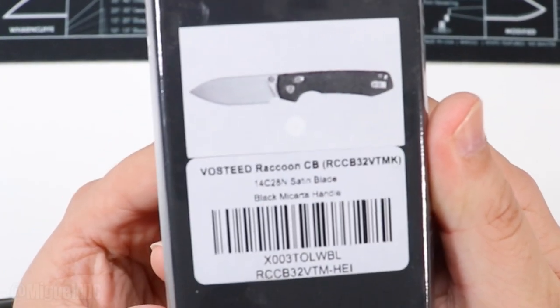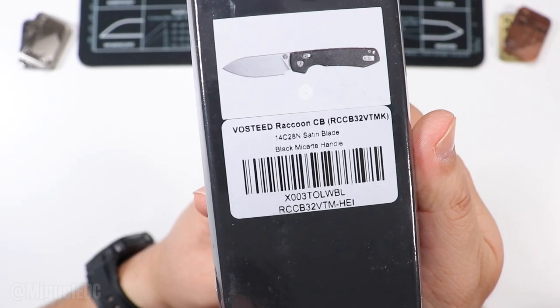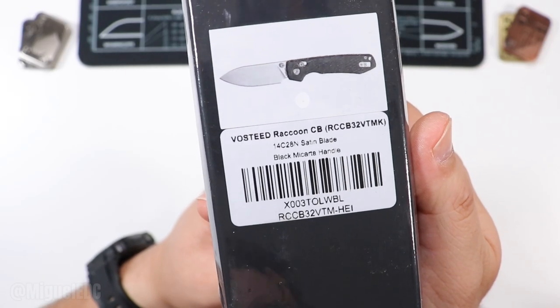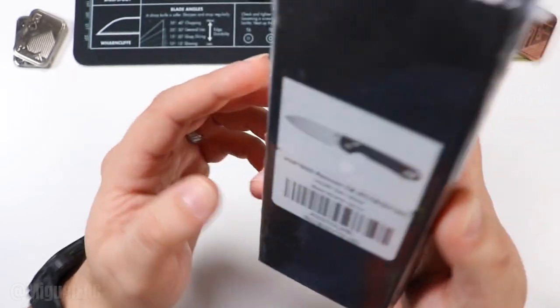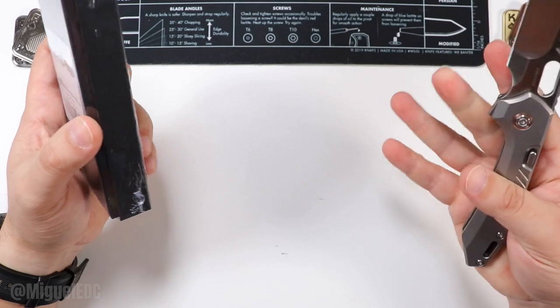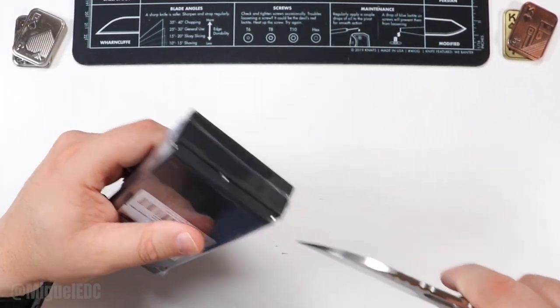Let me give you guys a little hint right there. That is the Vosteed Raccoon, CB, Sutton Blade 14C28N with black micarta handle. And if you know, you know, the Raccoon is just such a popular model from Vosteed.